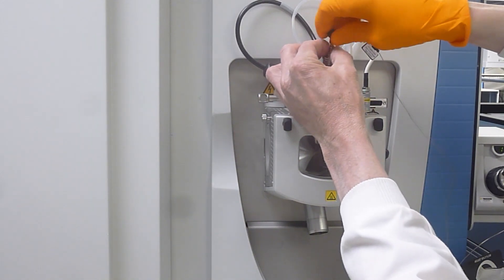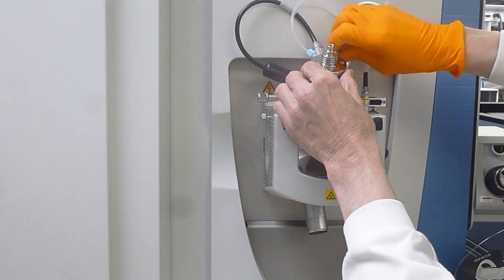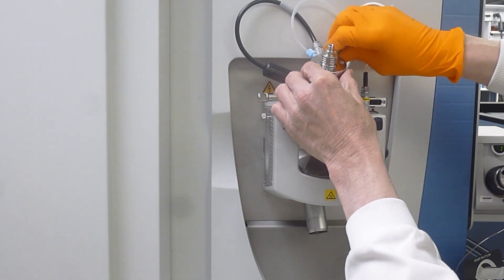Next you can remove the Viper fitting, detaching the HPLC from the QX Active. Then undo the two gas tubes, the green one and the blue one.